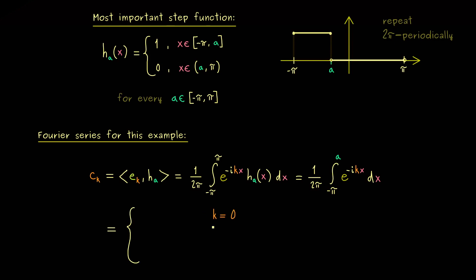The first case is k is equal to 0, which means we integrate the constant 1 here. Hence, in this case, the integral is just the length, the distance between minus pi and a. Which is simply a minus minus pi. So we have a plus pi. And this one divided by the constant 2 pi. And with that we have c_0.